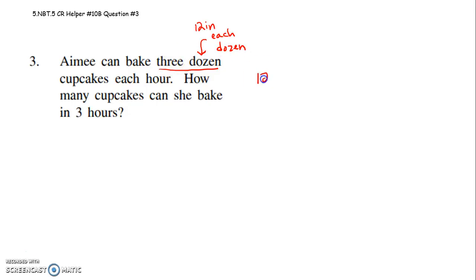So we have 3 dozen, so 12 times 3. In 1 hour, Amy can bake - 3 times 2 is 6, 3 times 1 is 3 - 36 cupcakes in 1 hour, because she bakes 3 dozen.